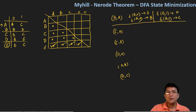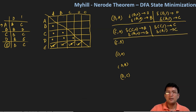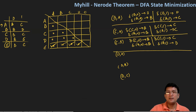For the CA pair, C on zero and A on zero both go to B — not distinguishable. C on one and A on one both move to C — same state, so CA cannot be marked. For CB, C on zero and B on zero both lead to state B — cannot be marked. Then C on one is C and B on one is D; the CD pair is not marked, so CB cannot be marked either.